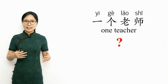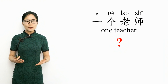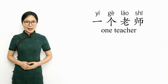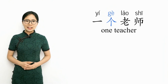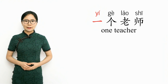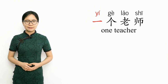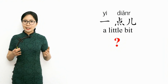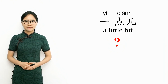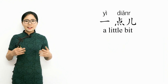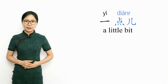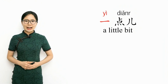In the phrase that means one teacher, does the 'let it be Yi' rule apply? What tone should Yi have? That's right — Yi is followed by the measure word ge, so the rule does not apply. Ge uses the fourth tone, so Yi should change to the second tone, the rising tone: Yi ge laoshi, one teacher. In the phrase that means a little bit, does the rule apply? What tone should Yi have? Correct — the rule does not apply, and Yi is followed by the syllable diar, which uses the third tone, so Yi should be pronounced with the fourth tone, the falling tone: Yi diar, a little bit.